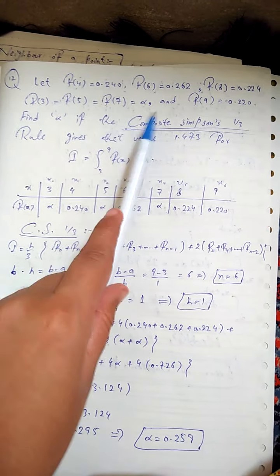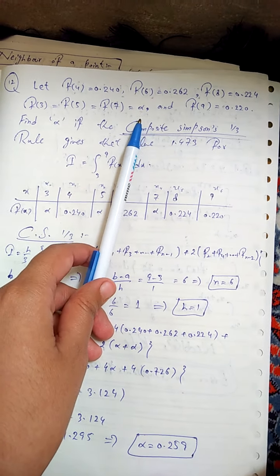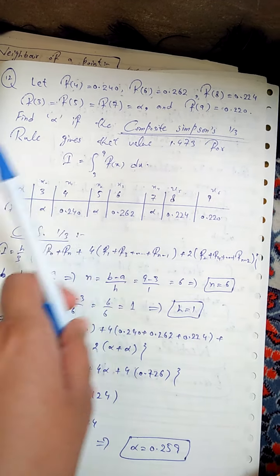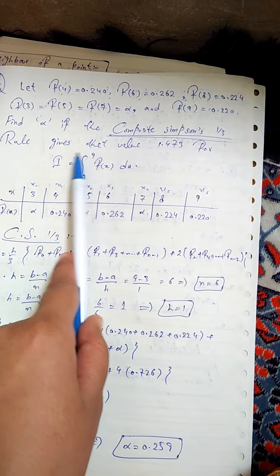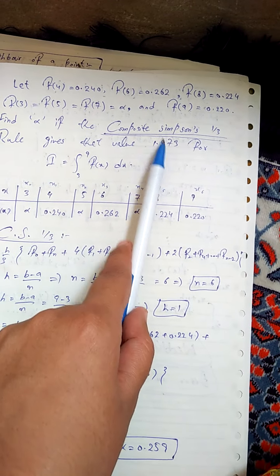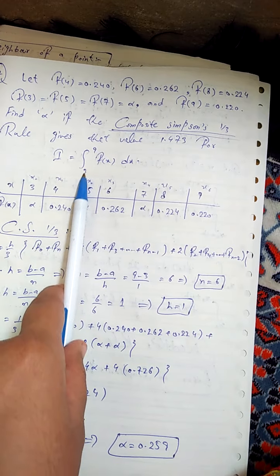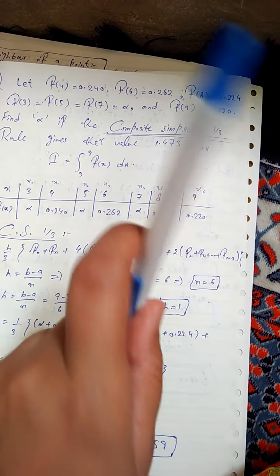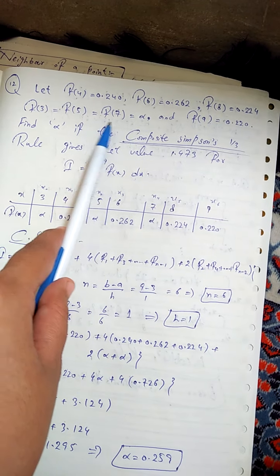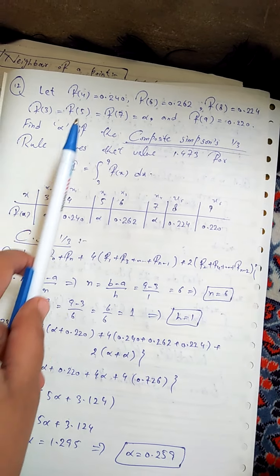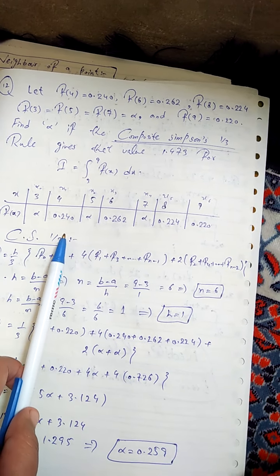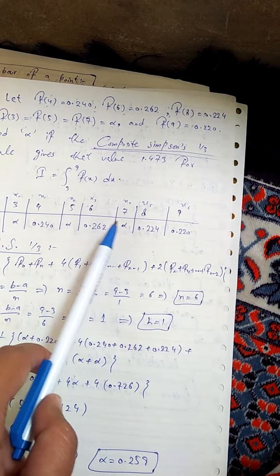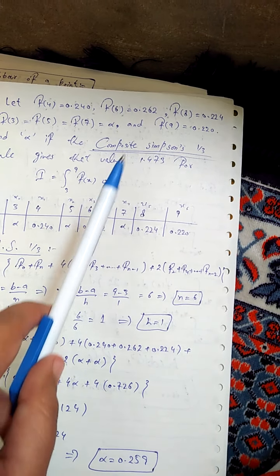Let's ask the question. We have our function values given and we have to find alpha and use what? We have to do 1 by 3 rule. We have to use and the best thing is that we have to give the final answer. 3 to 9 values are given. Alpha, 4 value given is 0.25, 5 value given is also alpha, 7 value is also alpha, 6 values given is 8, 9 values are given. This is the whole list we have made.